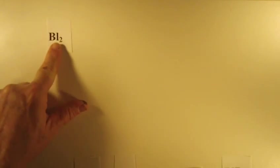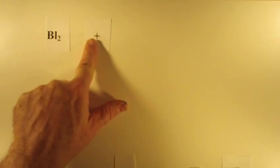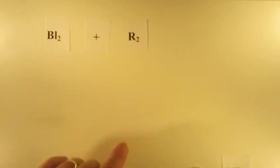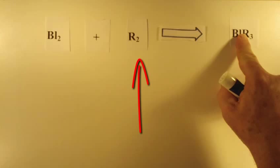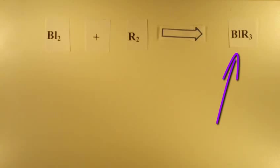Let's look at a hypothetical two-way reaction. If you have two elements that are diatomic molecules, let's say the blue element and the red element, they can react to form a compound, a molecule, that contains one blue atom and three red atoms.